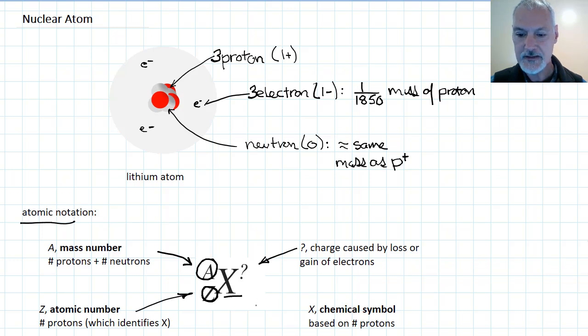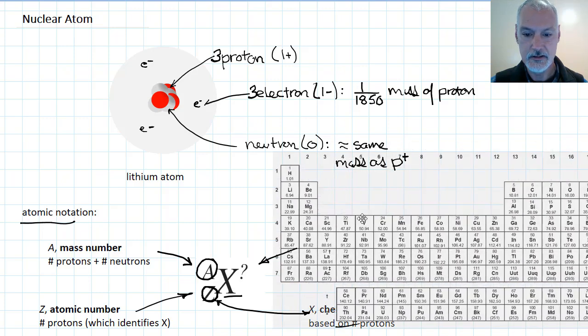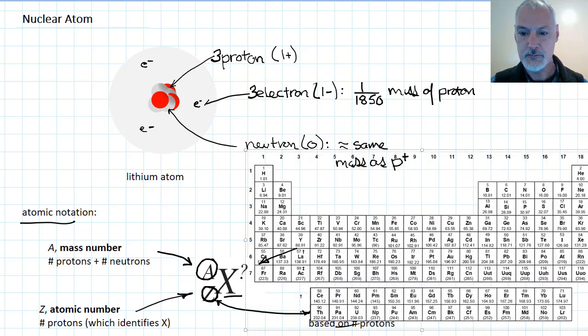And finally, the chemical symbol X, that's based on my number of protons that I have. So once I know this number, I can get the symbol. And the way we get that is from our periodic table. I'll bring one over here, just to show you a bit how that works.